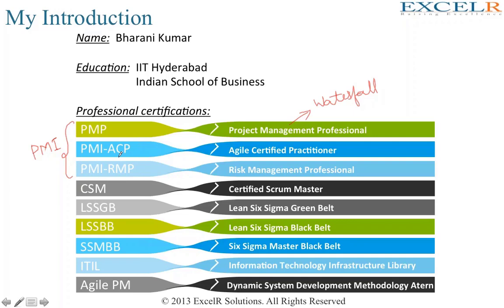I am also an Agile Certified Practitioner, so I can manage projects using Agile methodology. The ACP exposes participants to four Agile methodologies: Scrum, Extreme Programming, Lean, and Kanban. I'm also a PMI Risk Management Professional, so I can manage risks on projects. I'm also a Certified Scrum Master, so I can deliver projects using Scrum, which is a subset of Agile methodology.